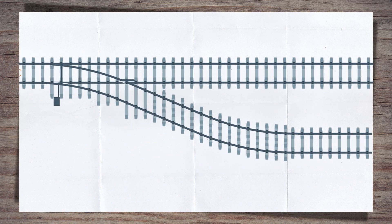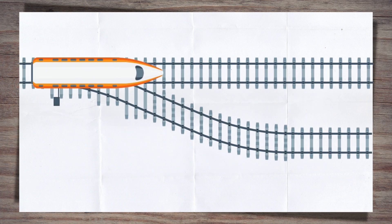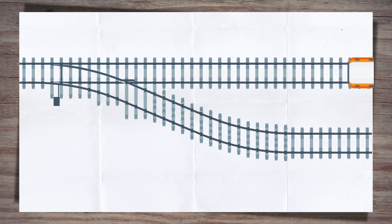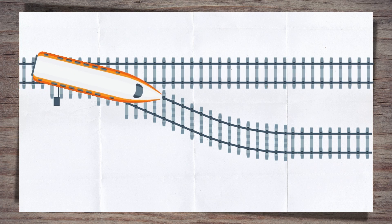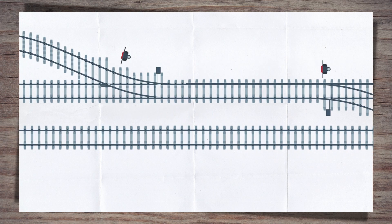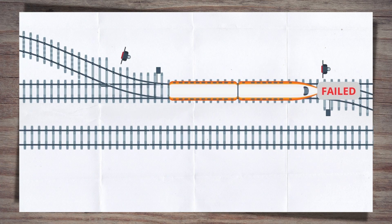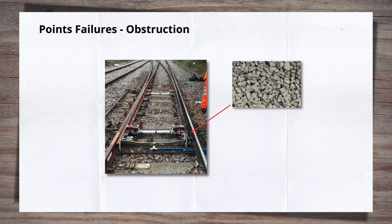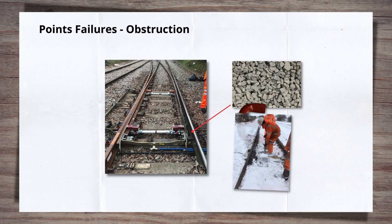Points are the moving pieces of rail that allow trains to change tracks. Given their moving nature, they are susceptible to issues. Issues with points can also have a big impact as they can lock up a junction, preventing multiple trains moving. The common issues are obstructions getting into the points, preventing them from moving all the way over. The obstruction can be a piece of ballast, a loose clip or bolt, or even snow.